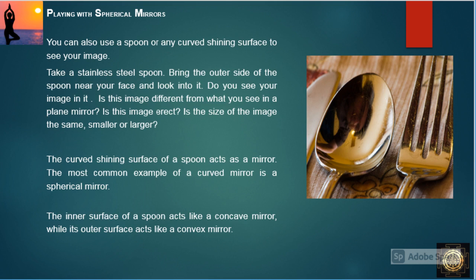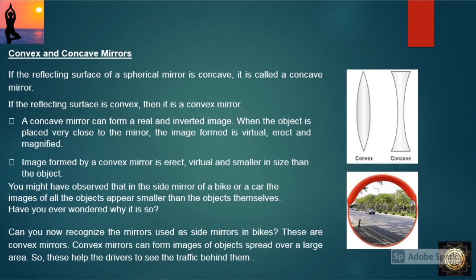The curved shining surface of a spoon acts as a mirror. The most common example of a curved mirror is a spherical mirror. The inner surface of a spoon acts like a concave mirror, while its outer surface acts like a convex mirror. Let us find out what the words concave mirror and convex mirror mean.